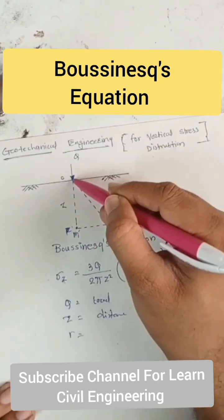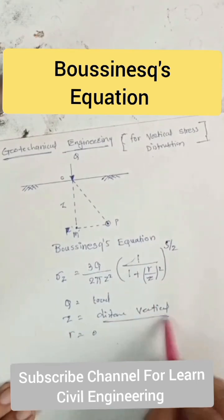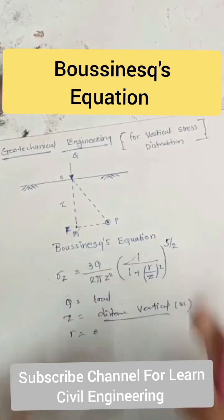If the point is directly below the point load, then r equals zero. z is the vertical distance in meters. So this is Boussinesq's equation.